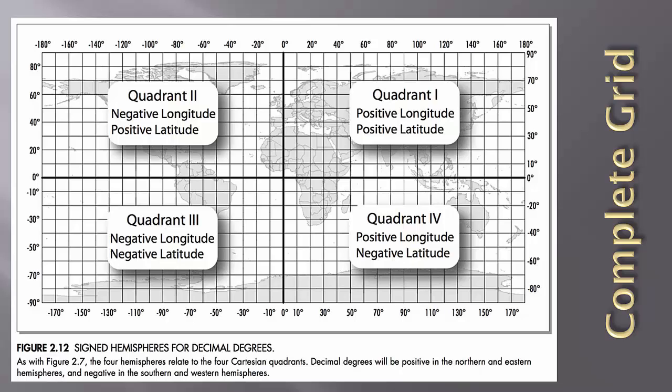Besides the decimals, you may notice two things that happen in the conversion. First, longitude is reported before latitude, since it is following the Eastings and Northings convention described earlier. Second, there is also a negative sign in front of the 94. Decimal degrees use signed hemispheres instead of a letter designation north, south, east, or west, just like the signed Cartesian coordinate quadrants described earlier. Figure 2.12 illustrates the sign that each hemisphere takes on in the system: positive numbers for the northern and eastern hemisphere, negative numbers for the southern and western hemisphere.